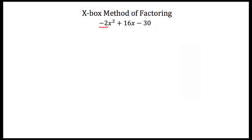In this particular equation, all three of these numbers — 2, 16, and 30 — are all divisible by 2. So I'm going to factor a negative 2 from all three of these, because my leading coefficient in front of my x squared is negative. So if I factor out a negative 2, I'll have negative 2 times x squared minus 8x plus 15.